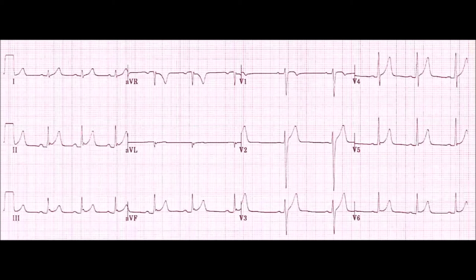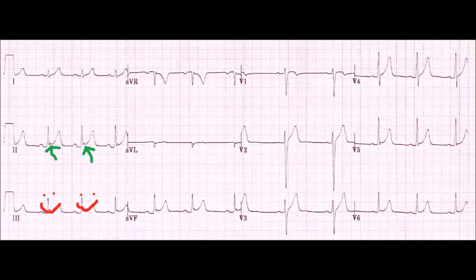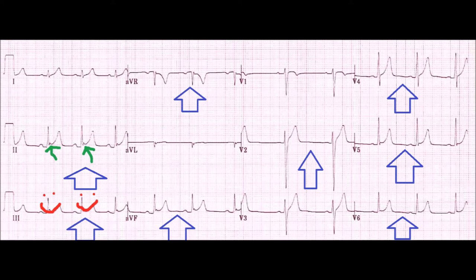Let's take a look at a BER ECG. You'll notice some diffuse ST elevation, and you might wonder if this could be pericarditis. Well, let's look at why it's not. The very first thing we notice are the smiley face signs. Then we notice the notching at the J point, which is characteristic of BER. Moving forward, we can see ST elevation everywhere. You'll also notice an absence of the knuckle sign, which is something I'll cover in a future video on pericarditis.